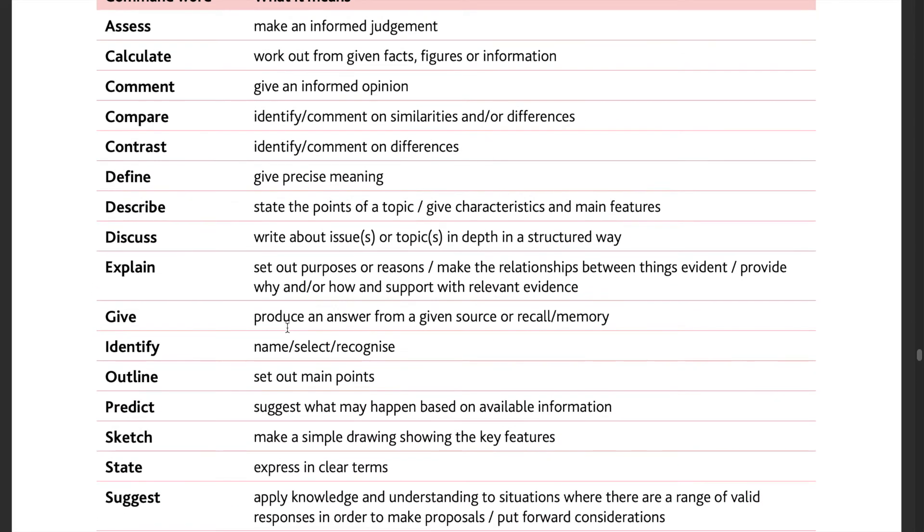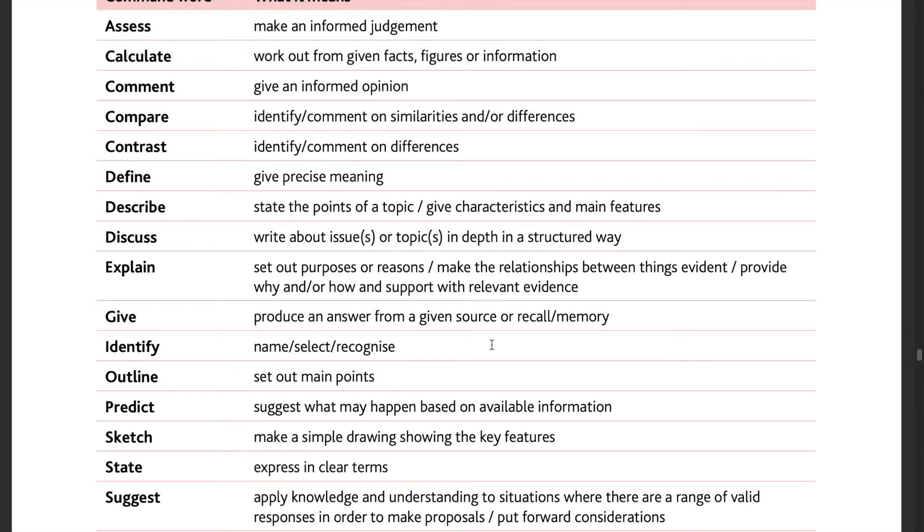The next one is give. Usually it goes like this: give an example of this process and so on. It is producing an answer from a given source, which in your case would be the textbook, or recalling it, having stumbled upon it in a past paper you have recently solved.